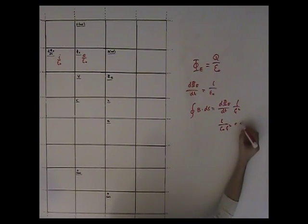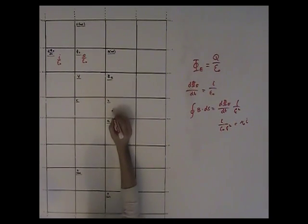And this is just Mu Knot and I. So we'll write here, Mu Knot and I.